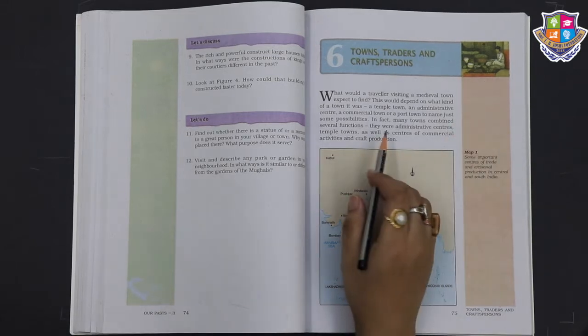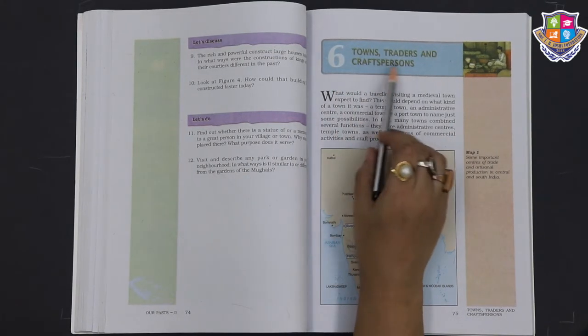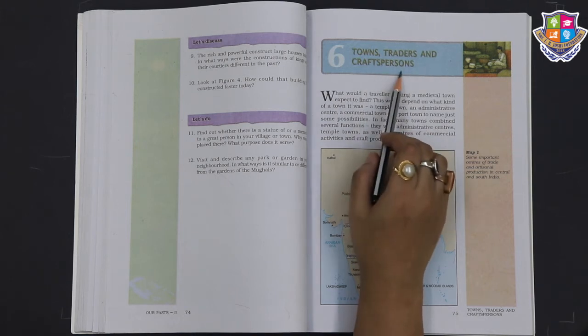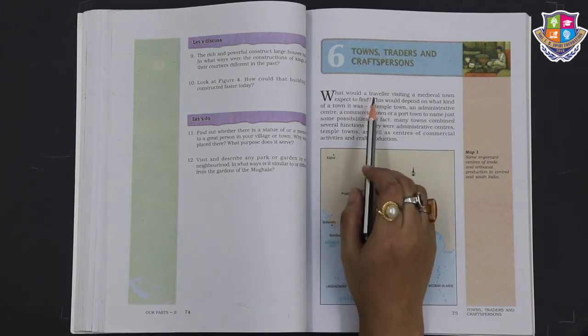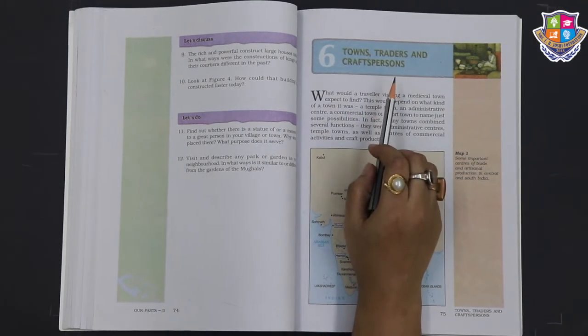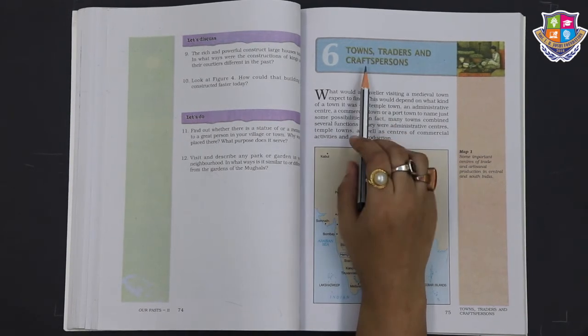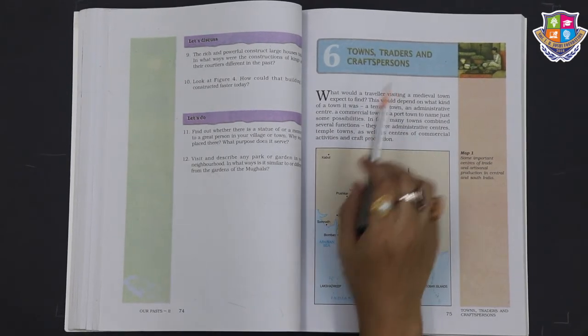Hello dear students, welcome back to the second semester of lesson number six, Towns, Traders and Craftspersons. In this chapter we are going to learn about what kinds of towns existed in the medieval period, who were the traders and who were the craftspersons. So let's begin.